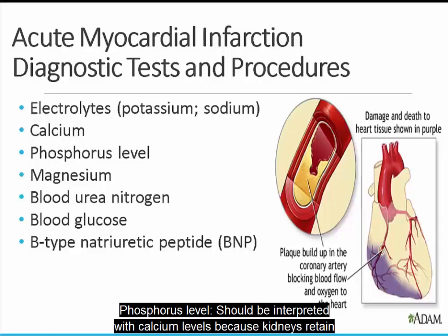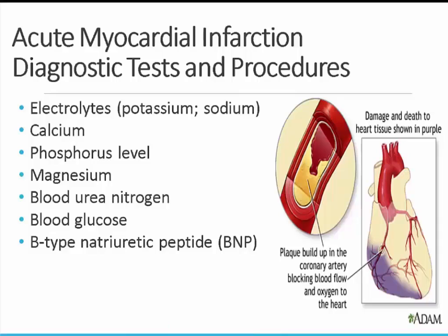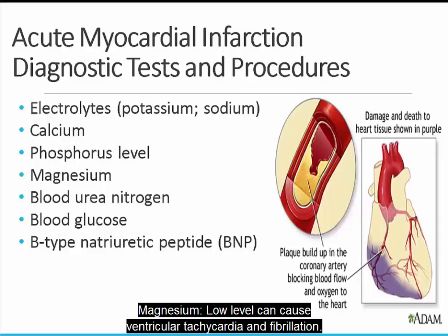Phosphorus level should be interpreted with calcium levels because kidneys retain or excrete one electrolyte inversely to the other. Magnesium: low levels can cause ventricular tachycardia and fibrillation; high levels can cause muscle weakness, hypotension, and bradycardia.